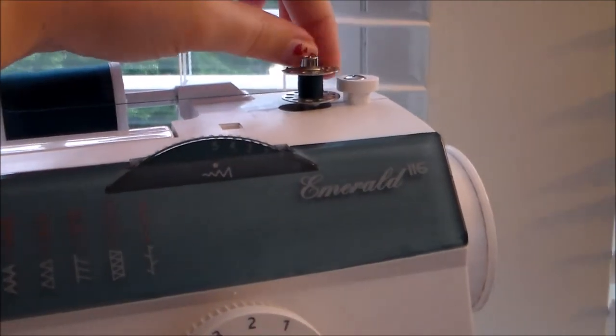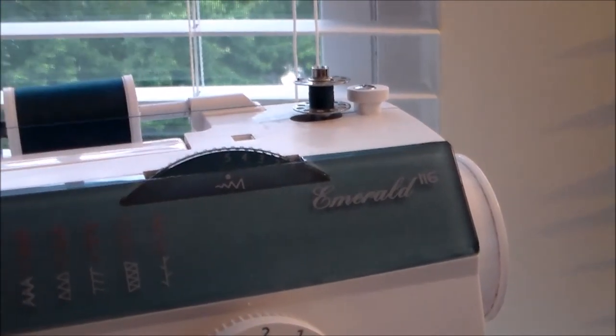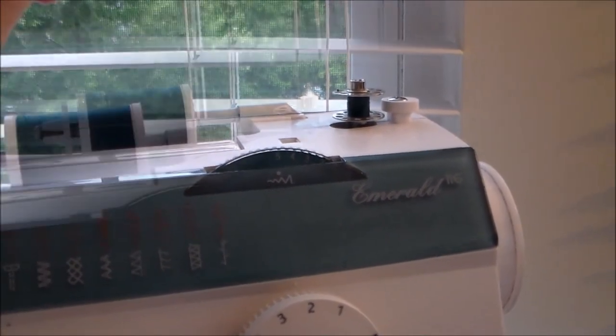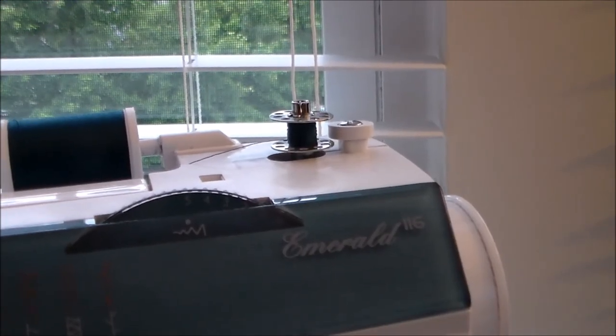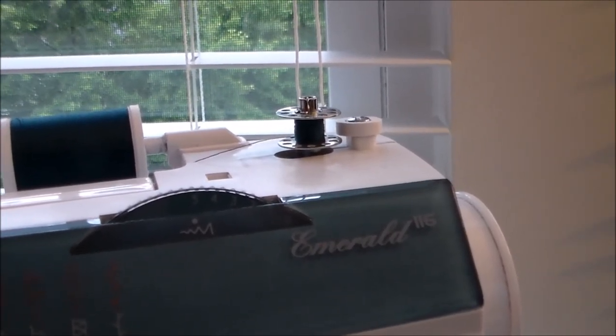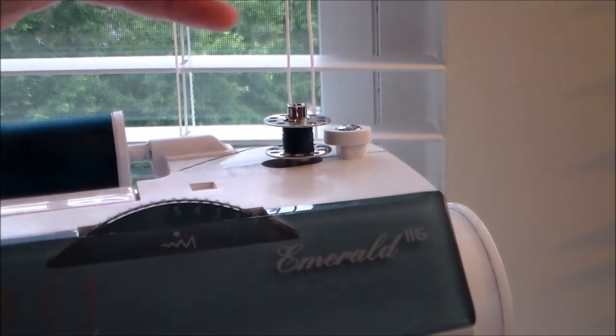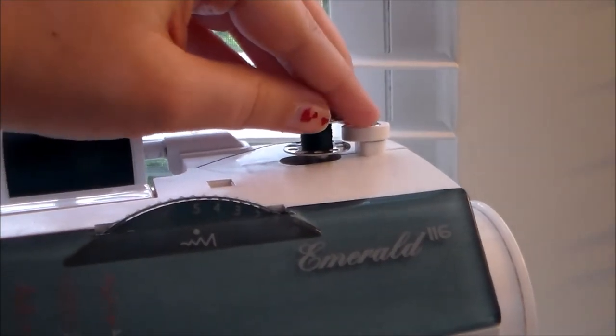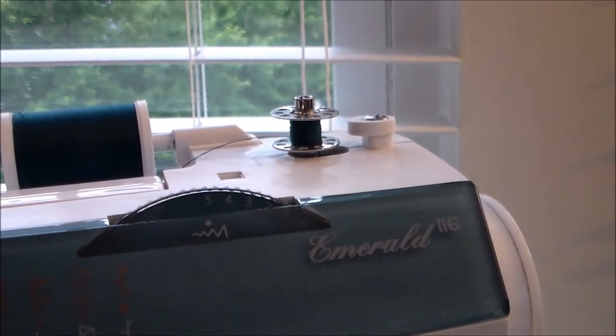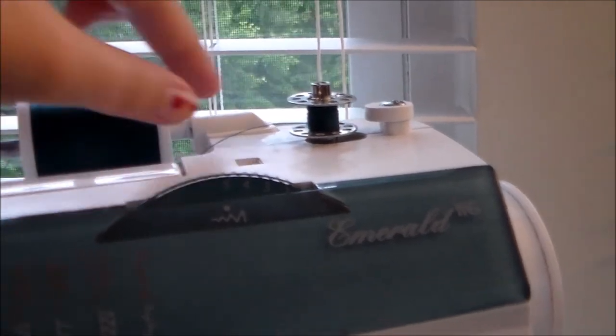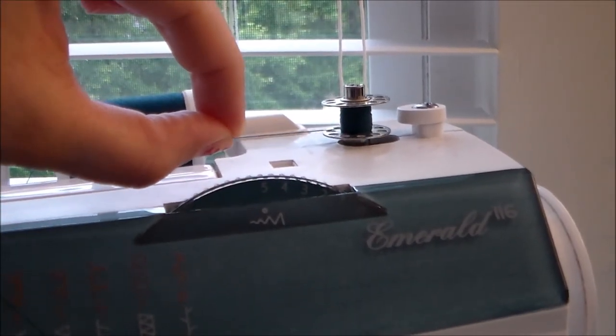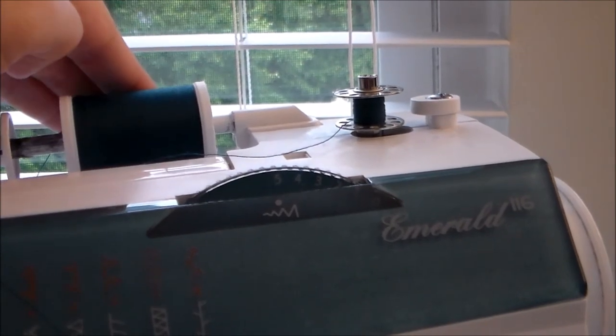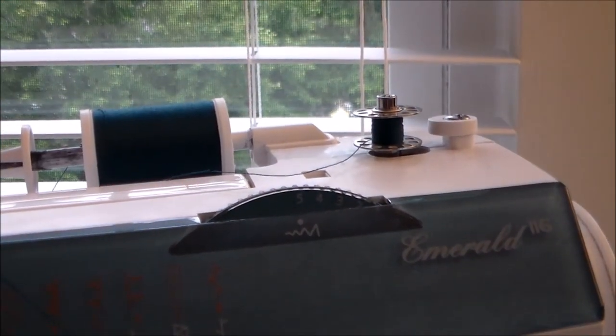Once you've got it partially filled you can let go of the top thread and just continue filling the bobbin. If you're only needing a little tiny bit of thread you don't have to fill the bobbin fully. You can just fill it to whatever you think is appropriate, then pop the bobbin back out so that it can be removed and just trim the thread so that it is no longer attached to the larger spool.